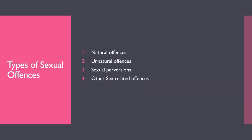Sexual offenses can be classified into four basic types: (1) natural sexual offenses, (2) unnatural sexual offenses, (3) sexual perversions, and (4) other sex-related offenses. Each category has clear definitions and sub-types, which we will now proceed to examine.